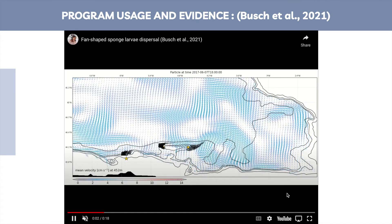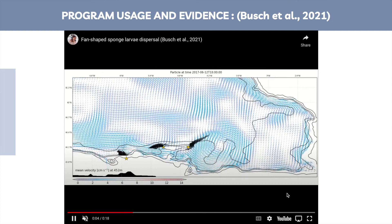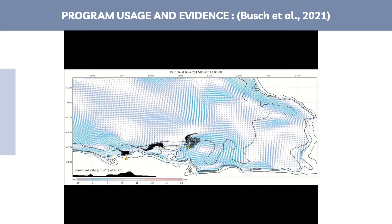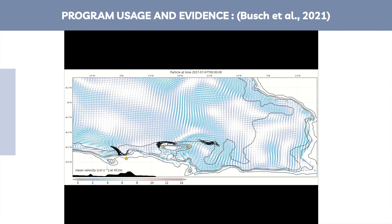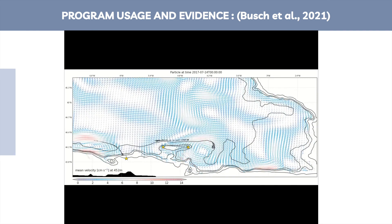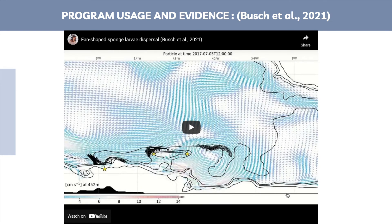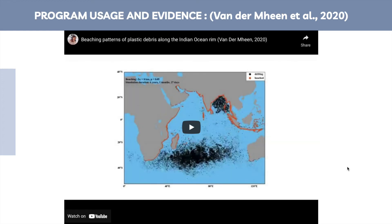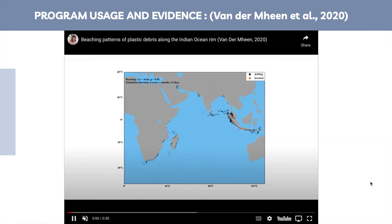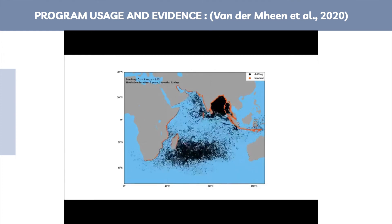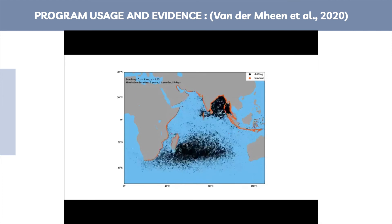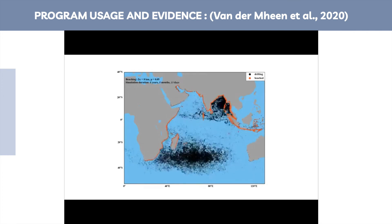As an example, here is larvae dispersal of fan-shaped sponge using Ocean Parcels. In this case the location is the Cantabrian Sea and the time period is 2017. Another example is the beaching patterns of ocean plastic in the Indian Ocean rim — the black particles are the floating ones and the red ones are the beached ones.